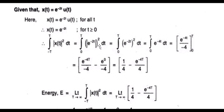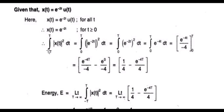If I substitute and keep going, taking the integral and substituting the upper and lower limits, then the minus signs cancel out — e to the power of zero is one — and it will become 1/4 minus e to the power of minus 4T divided by 4. So this is the expression when I want to calculate the integral from minus T to T.